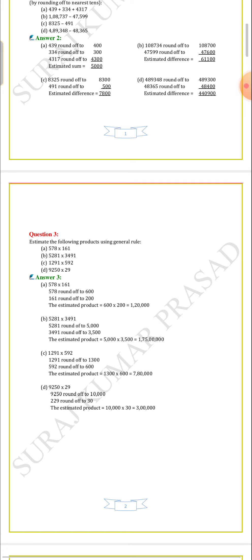Using the same process for question B: 5,281 into 3,491. First we round off each number — 5,281 rounds off to 5,000, and 3,491 rounds off to 3,500. The estimated product equals 5,000 × 3,500 = 1,75,00,000.